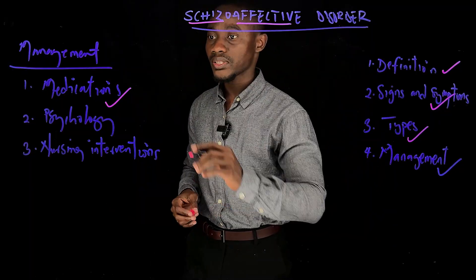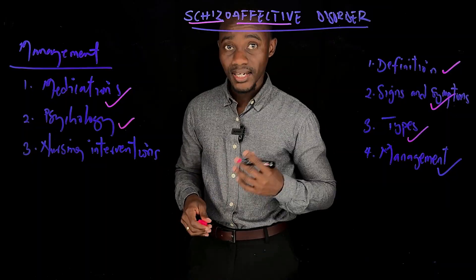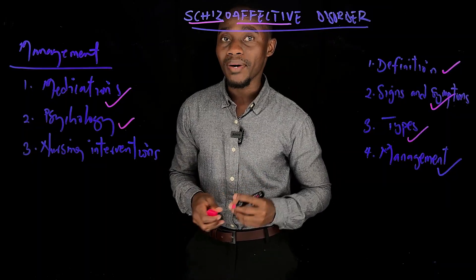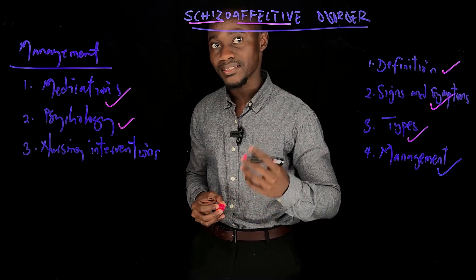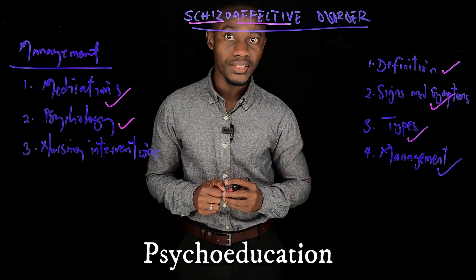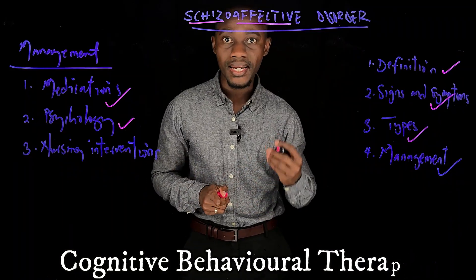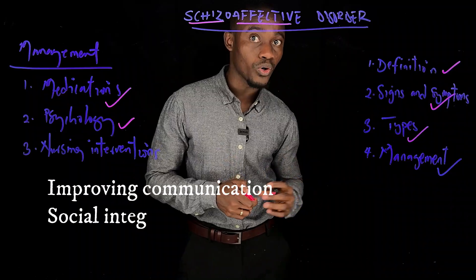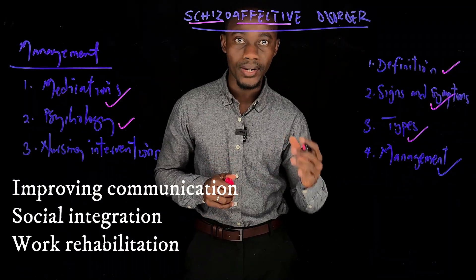Under the psychological management of schizoaffective disorder, individuals are taken through a number of psychological therapies to help them understand their disorder and how to cope with living with it. These include psychoeducation, CBT (cognitive behavioral therapy), and life skills training, which helps with things like improving communication, social integration, and work rehabilitation.